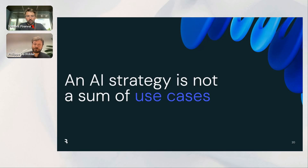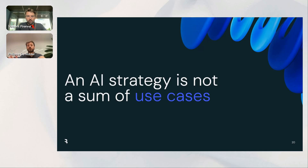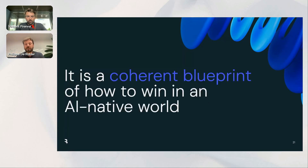When we think about AI strategy, let's first get something off the table. AI strategy is not a sum of use cases. We see that all too often — a roadmap consists of crowdsourced or bottom-up sourced use cases from existing functions and teams, which then get prioritized and roadmapped. That is an AI roadmap, but not a strategy.